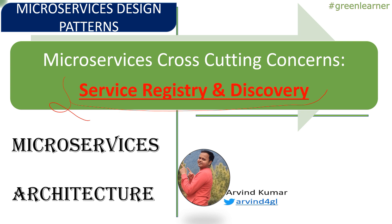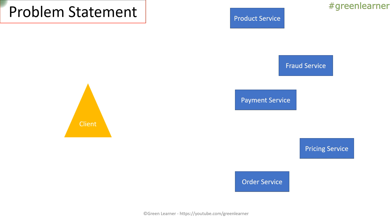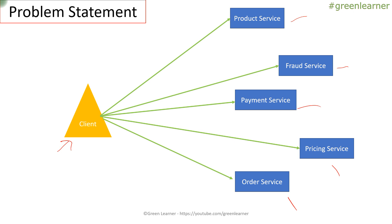The problem statement goes like this. These are the individual services that we have — I'm considering the online shopping portal — so product, payment, pricing, order services and others. This is the client which is going to use all of these services to complete the application. The most obvious solution is direct communication, but we moved to microservices architecture from monolithic architecture to get some benefit.